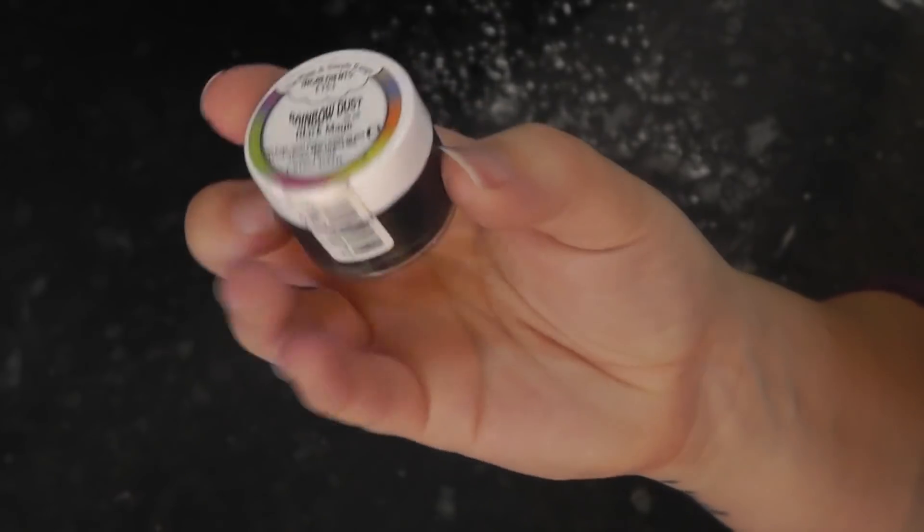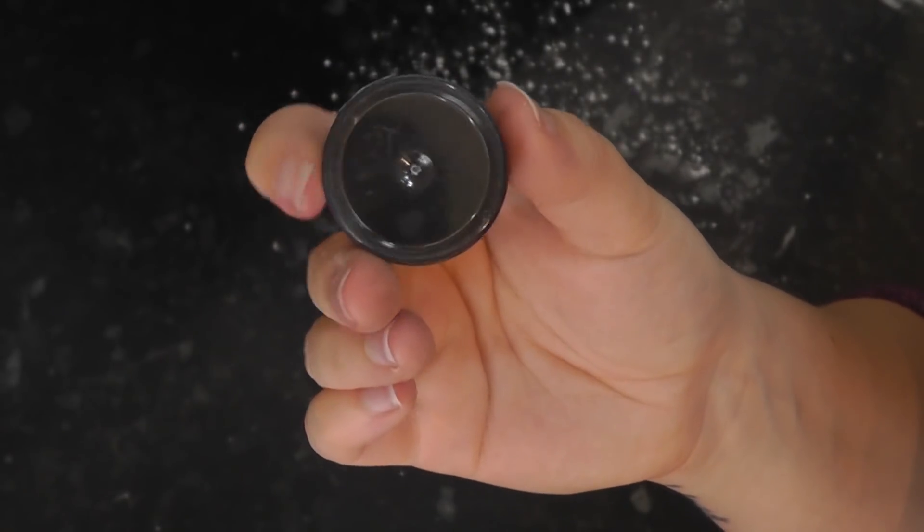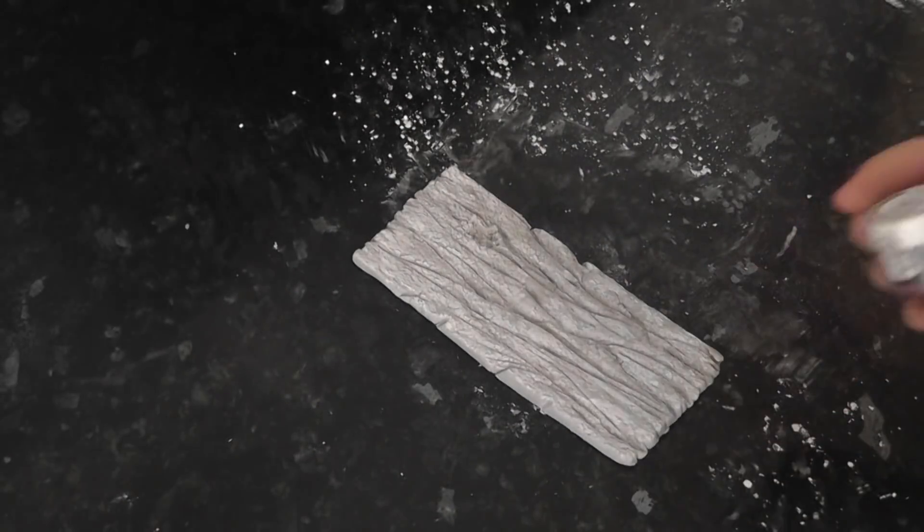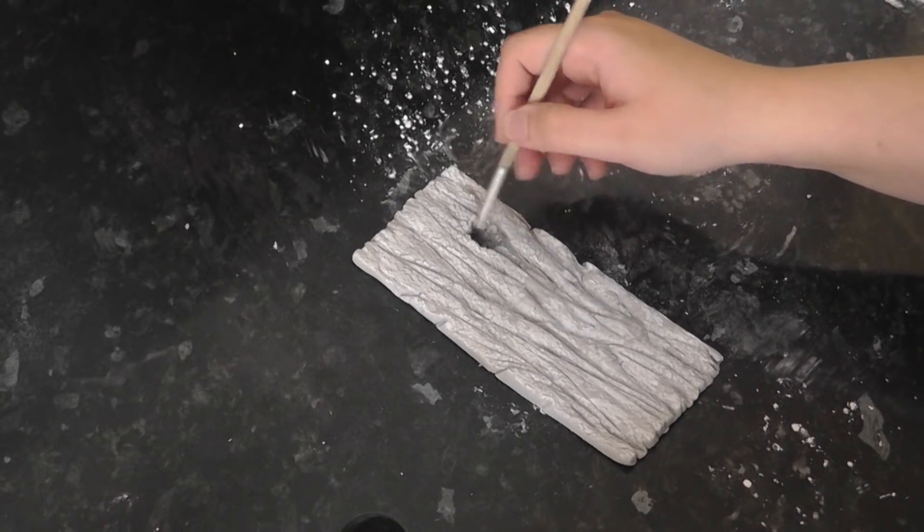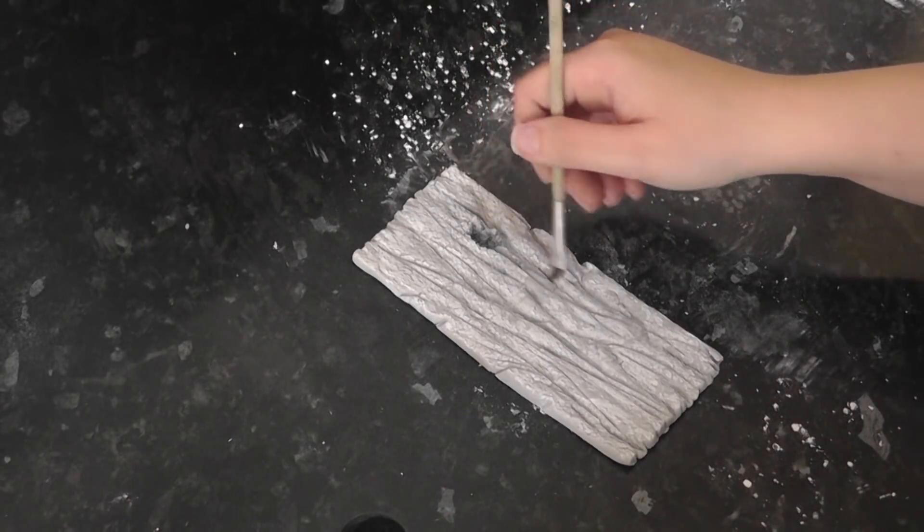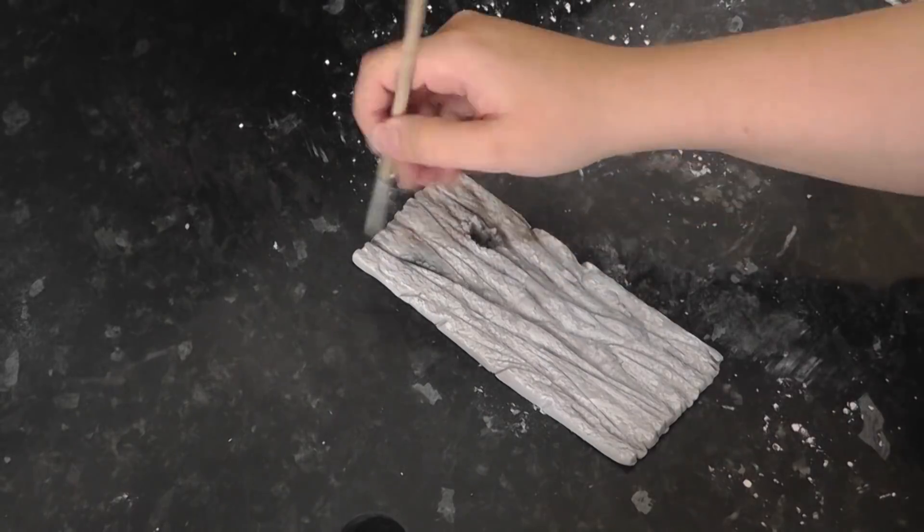Here I've got some black dust by Rainbow Dust. You can choose to airbrush, dust, or paint your wood. Airbrushing is quicker, but I thought I'd just dust this one to show you. With a dry brush, add dust to the deep holes and cracks.